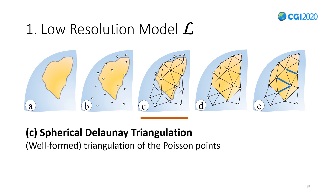Then we triangulate those points. We need a well-formed triangulation, so a spherical Delaunay triangulation does the job. It needs to be well-formed because it will undergo massive subdivisions later on in the following stages. We need it also to be irregular because we will grow a river network and the rivers need to be irregular to look natural.